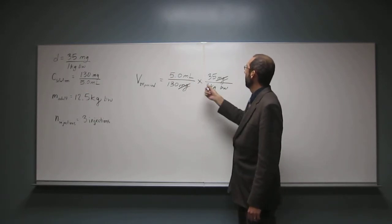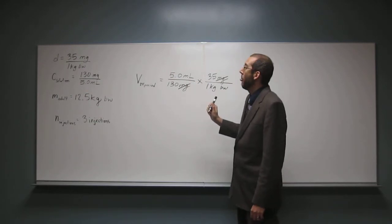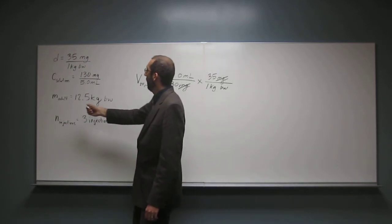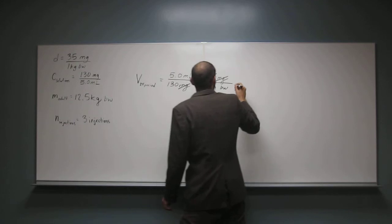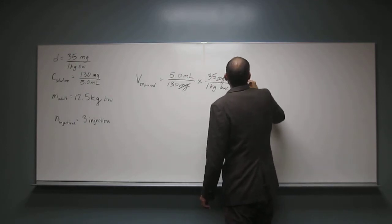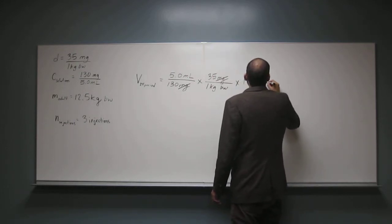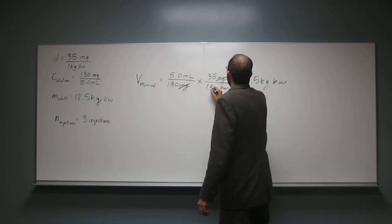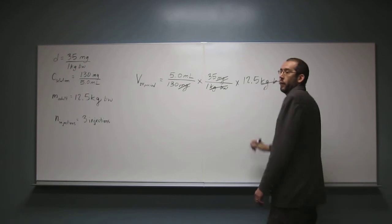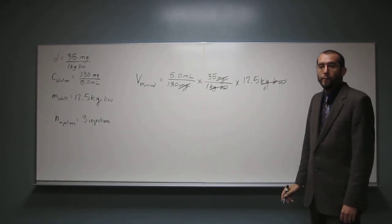Now I have milliliters per kilogram of body weight. But I know how much the adult weighs, right? 12.5. So I can multiply that by 12.5 kilograms body weight. And that cancels, like that.